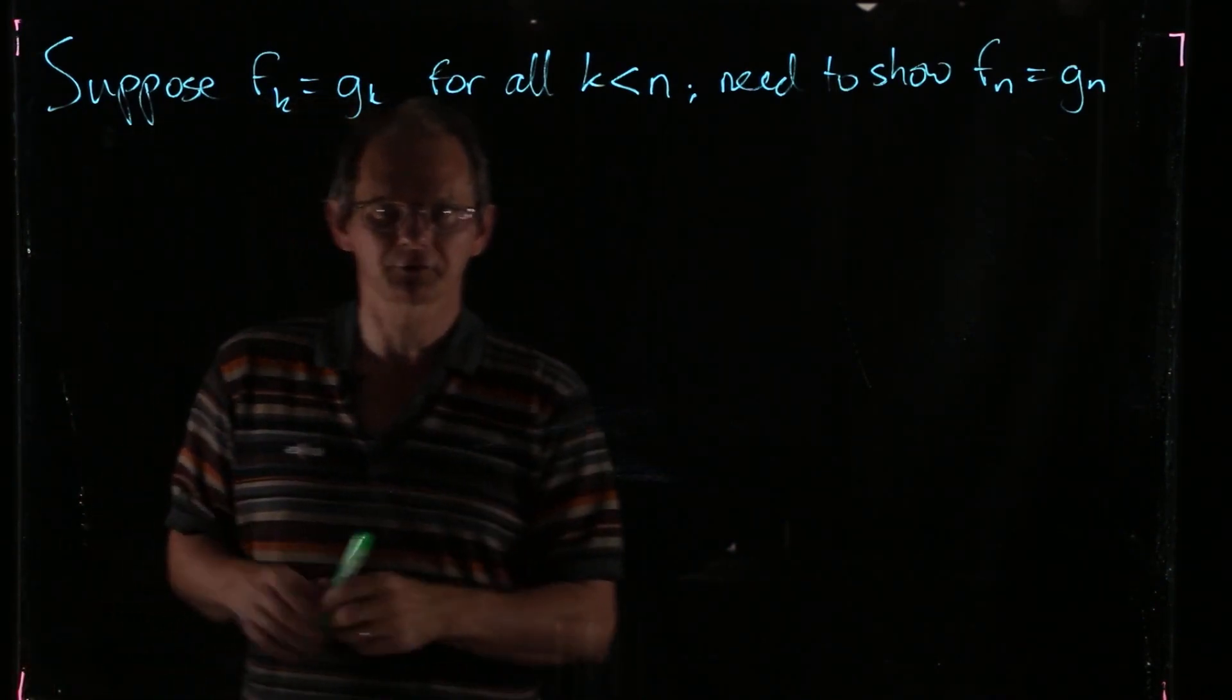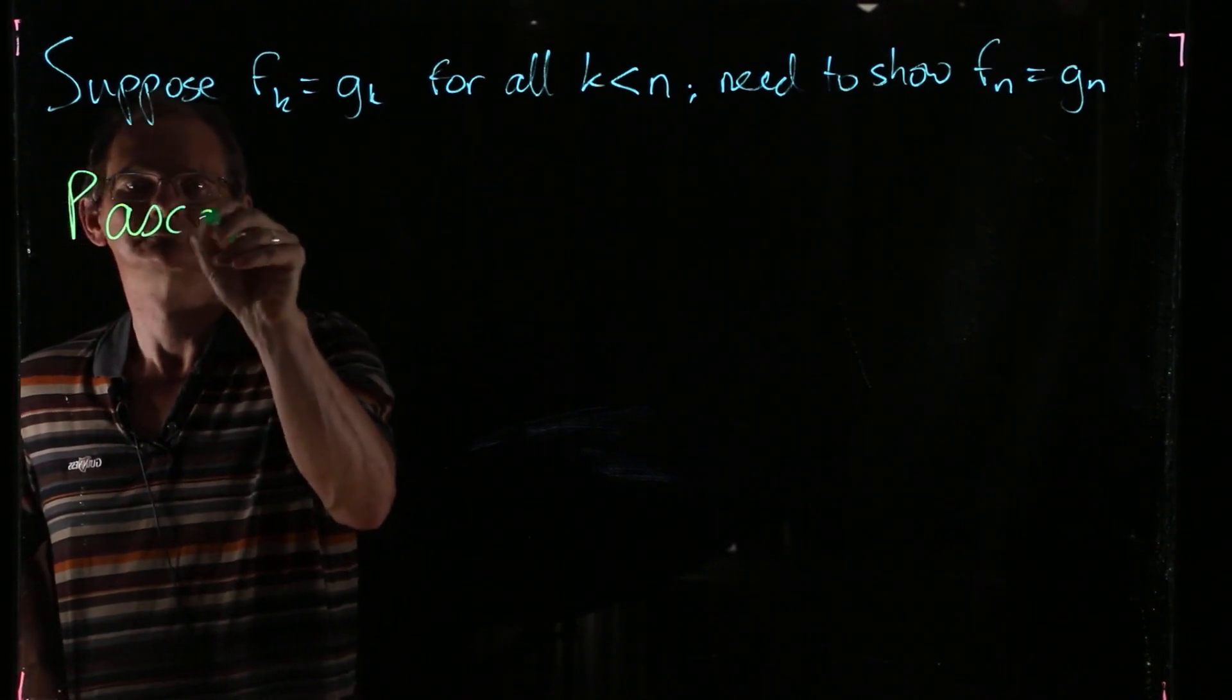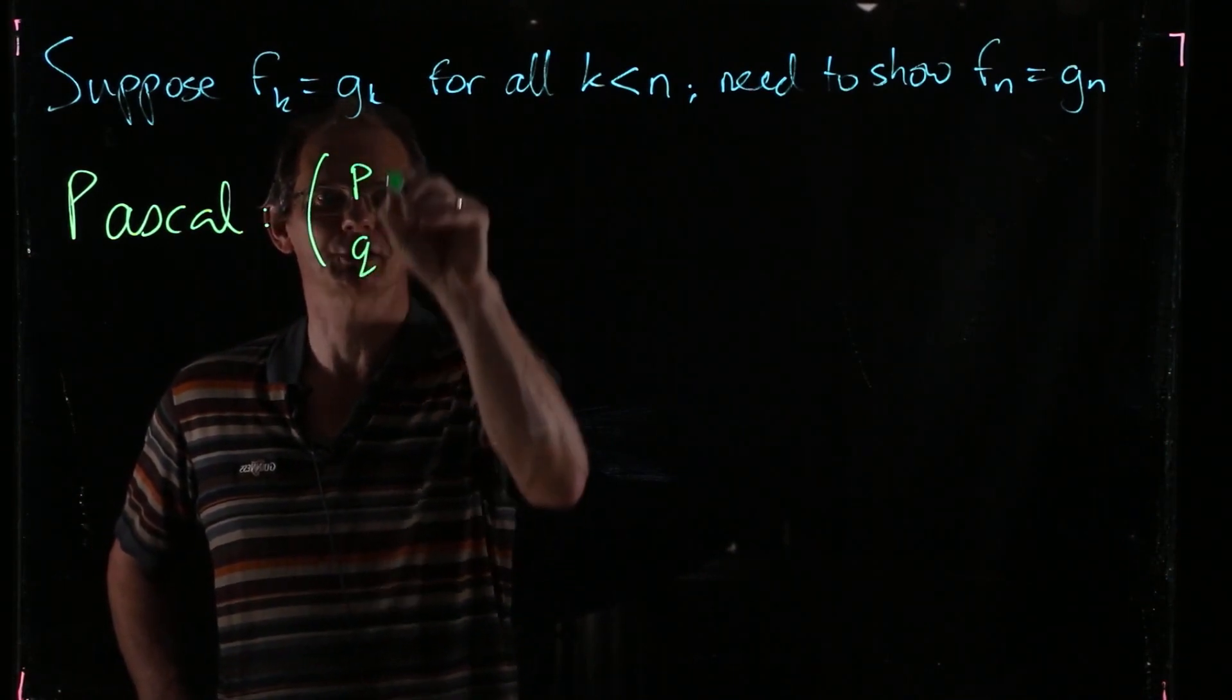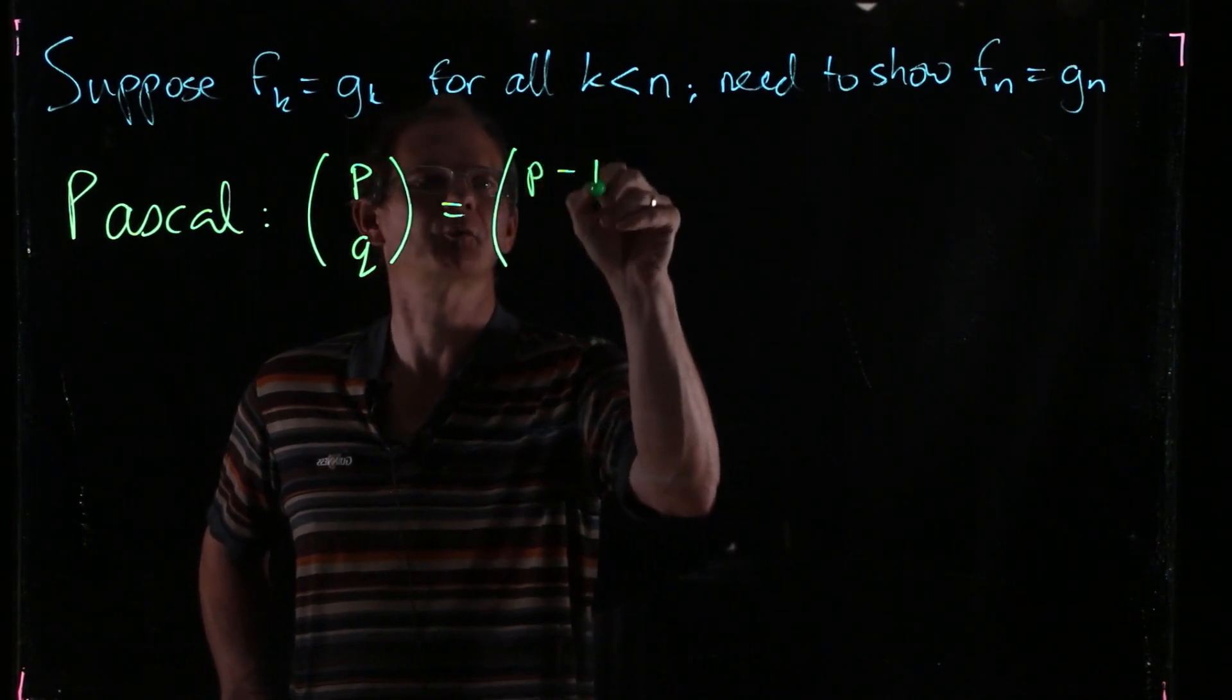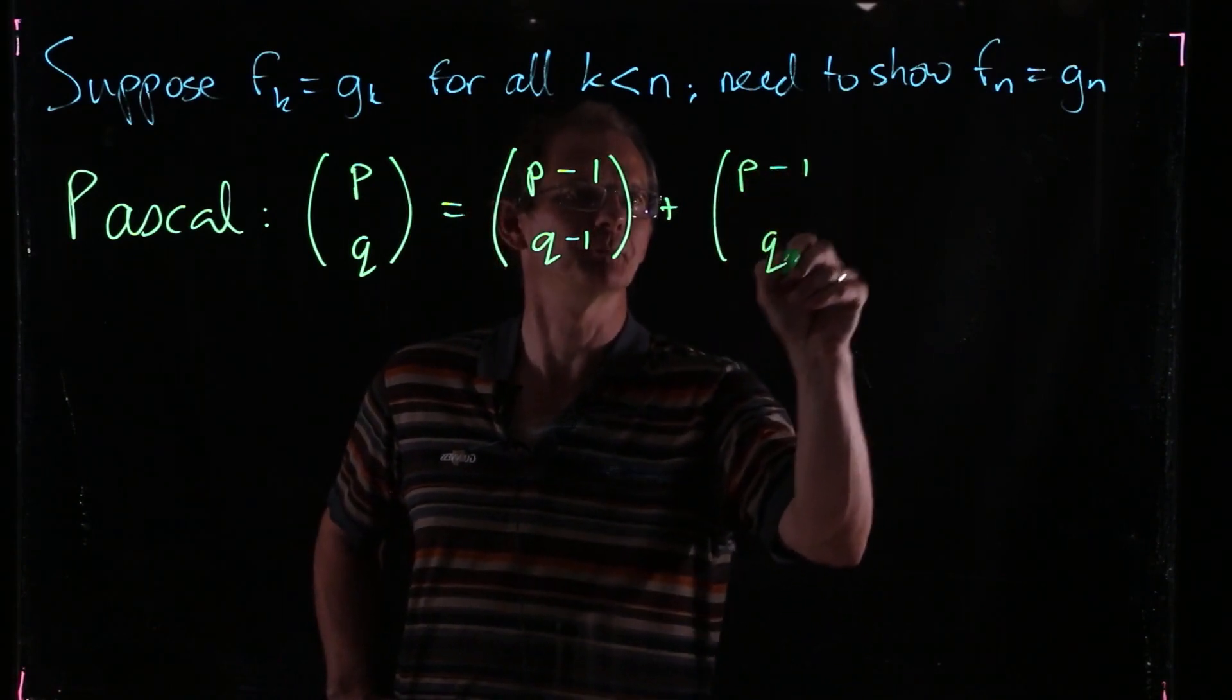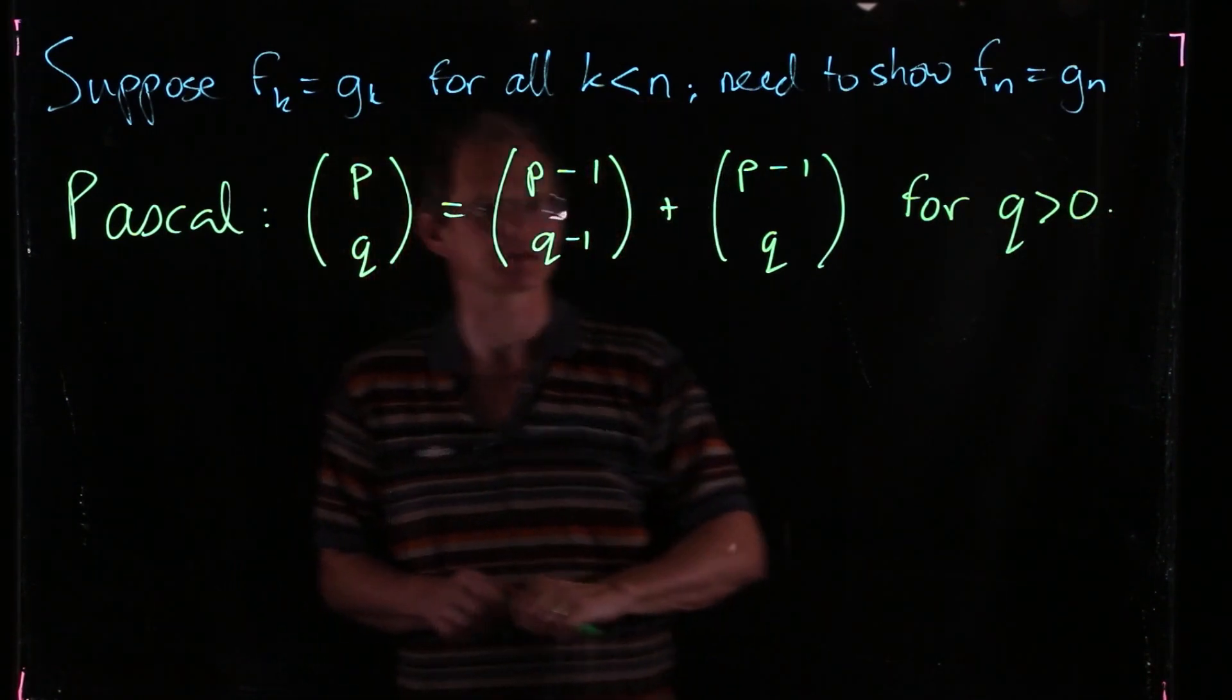And so we're going to do this by using Pascal's relation. So let's recall how Pascal's relation goes. It says that P choose Q is the same as P-1 choose Q-1 plus P-1 choose Q. And we need Q to be bigger than 0 for this to work.